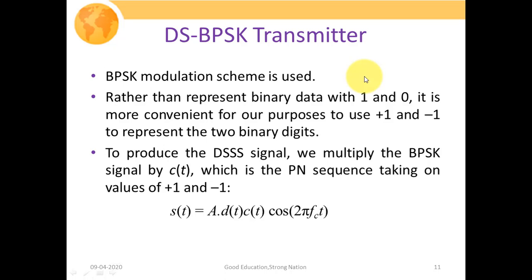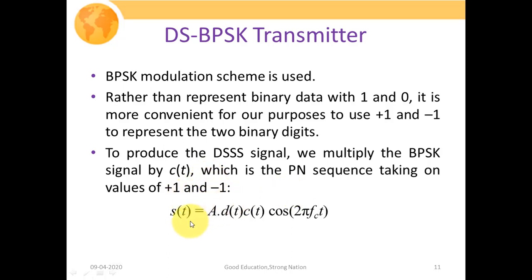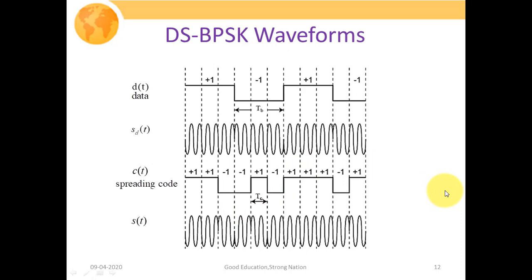For the passband DS-SS system, BPSK modulation is used. Binary data is represented as +1 and −1 rather than 1s and 0s for modulation purposes. To produce the DS-SS signal, we multiply the BPSK signal by C(t), where C(t) is the PN sequence taking values +1 or −1. The transmitted signal S(t) is the product of the data sequence D(t), the chipping sequence C(t), and the carrier A·cos(2πf_c·t).